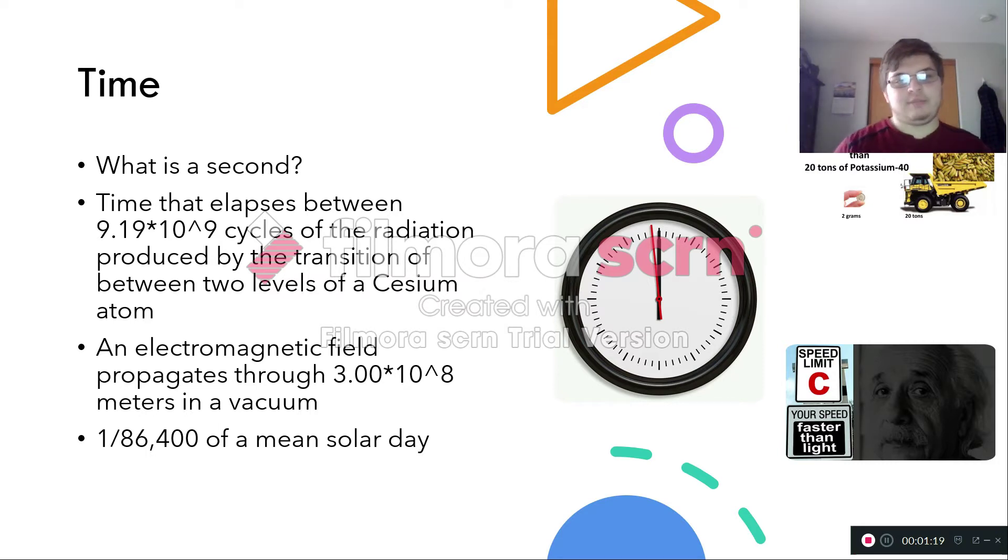But here's three definitions I found online, which are a little bit more specific. So what is a second? A second is the time that elapses between 9.19 times 10 to the 9 cycles of the radiation produced by the transitions between two levels of a cesium atom. If you look to one of these pictures, cesium-137 is 10 million times more radioactive than potassium-40. Those are pretty serious decay. The second definition is an electromagnetic field traveling or propagates through 3.00 times 10 to the 8 meters in a vacuum. If you divide that by second, you got yourself the speed of light or the constant.